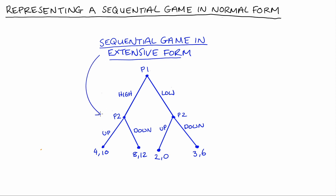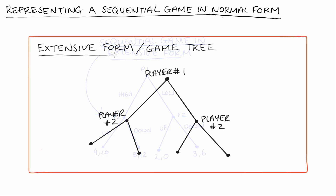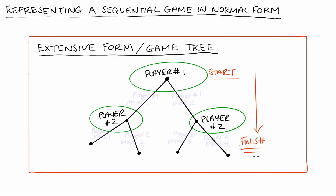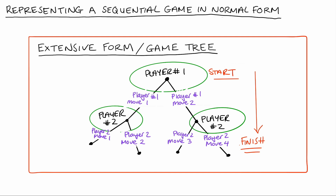In general, when we work with games that are in extensive form, we can see quite clearly from the form of the game the players in the game, when each player moves, the actions or moves available to each player, what each player knows at each point, and the payoffs associated with each possible outcome.